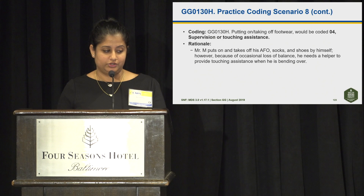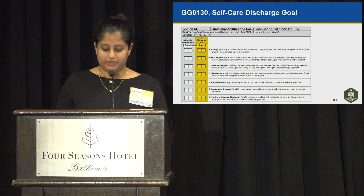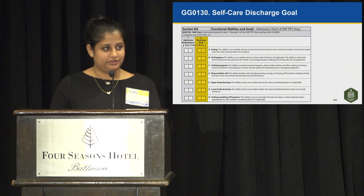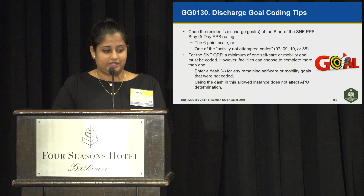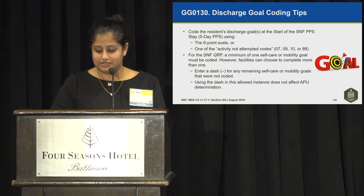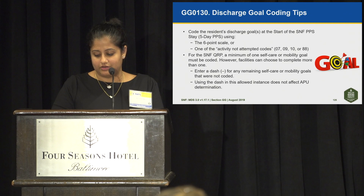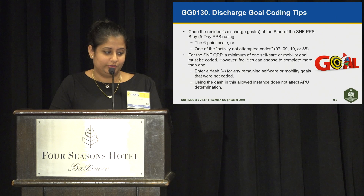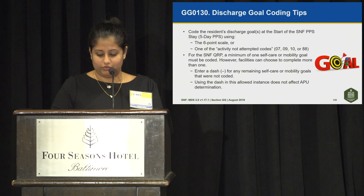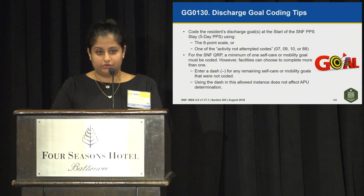For GG0130H self-care discharge goals, discharge goals are coded at the start of the SNF PPS stay — the five-day PPS — using the six-point scale or one of the activity-not-attempted codes: 07, 09, 10, or 88. For the SNF QRP, a minimum of one self-care or mobility goal must be coded, but facilities can choose to complete more. You would enter a dash for any remaining self-care or mobility goals that were not coded. Using a dash in this allowed instance does not affect APU determination.